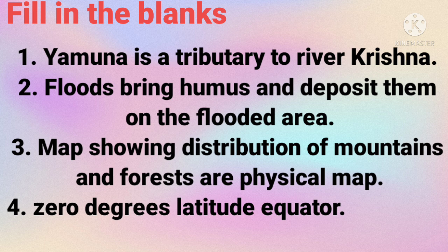So first: Yamuna is a tributary to river Krishna. Floods bring humus and deposits with them on the flooded areas. Map showing distribution of mountains and forest are physical maps. Zero degrees latitude is equator.